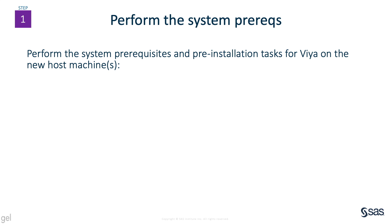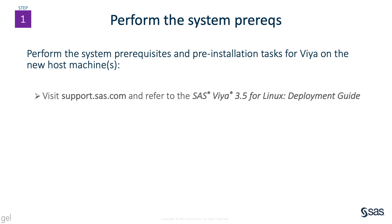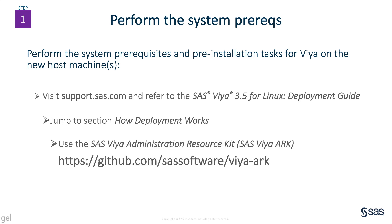Staging the new host machines for CAS workers and ensuring they meet Viya's system requirements is an important step. For details, visit the support.sas.com website and refer to the SAS Viya 3.5 for Linux deployment guide. Jump to the section about how deployment works and look for the reference to the SAS Viya Administration Resource Kit, what we call the Viya Arc. The Viya Arc provides automation to address most of the pre-installation tasks needed to ready a machine for Viya software, and it's an open source project hosted in GitHub, maintained by SAS for customers to use.